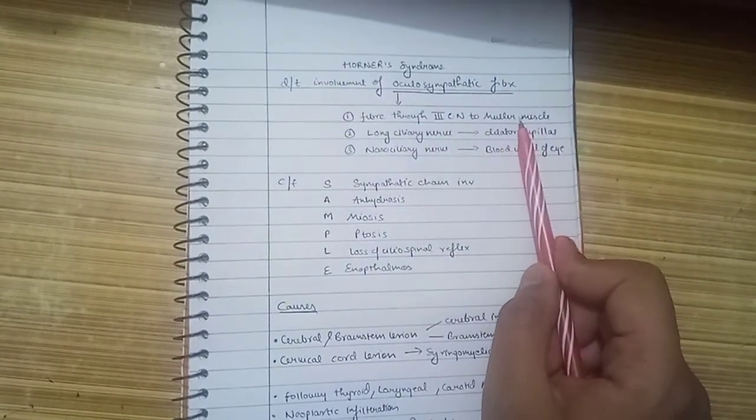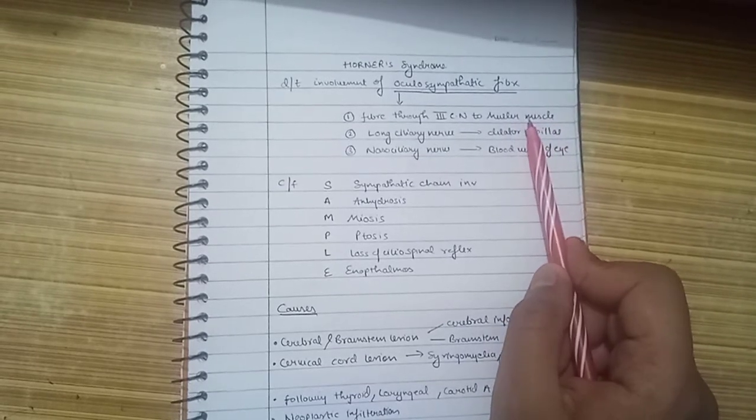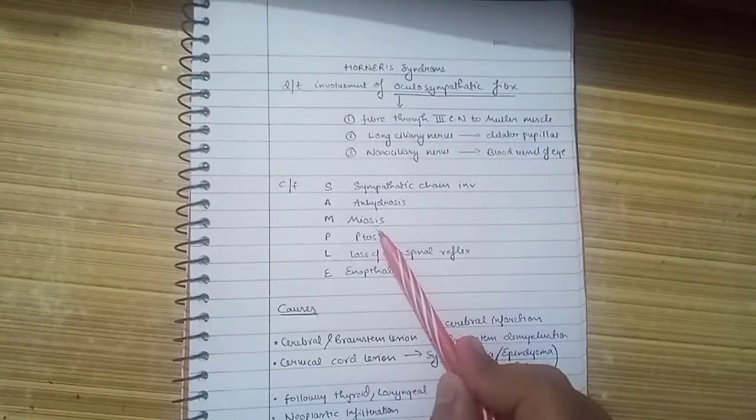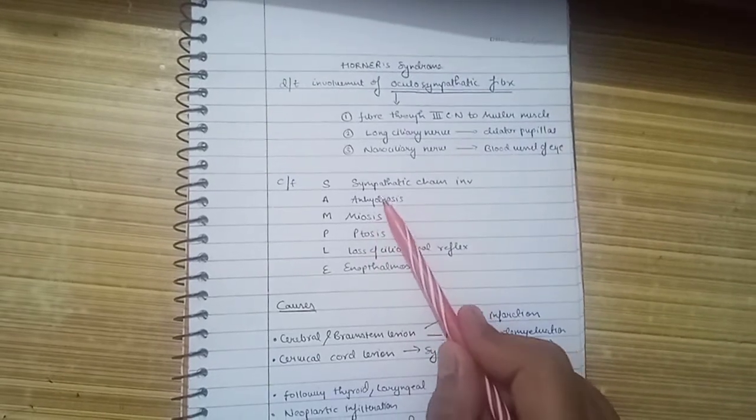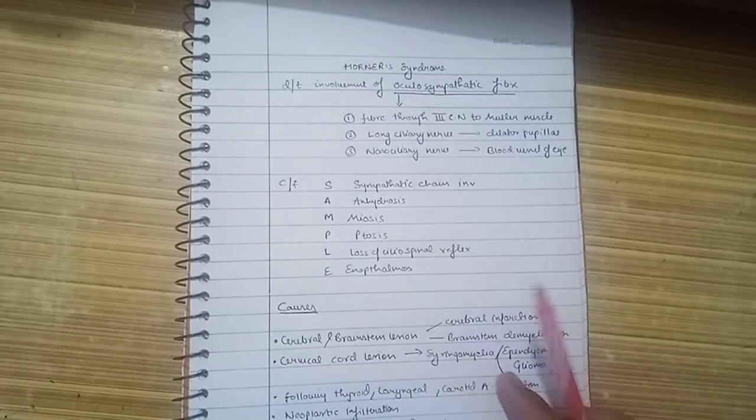You can also understand it by these features: the palsy of the Müller muscle will lead to decreased elevation of the upper eyelid leading to ptosis. The dilator pupillae palsy will lead to miosis, and the other features involve loss of cervical sympathetic chain.